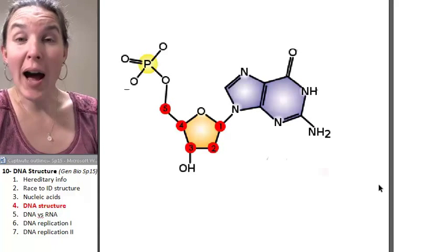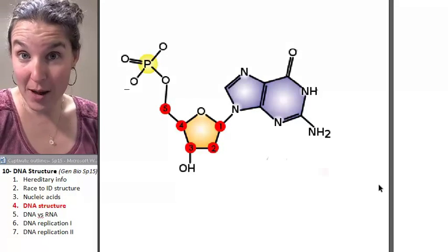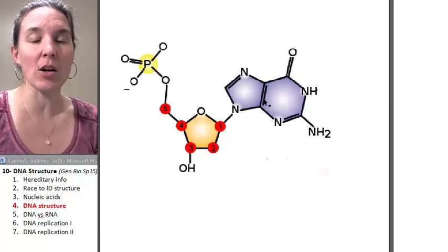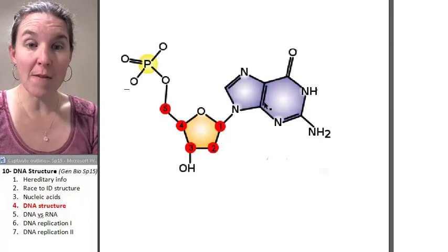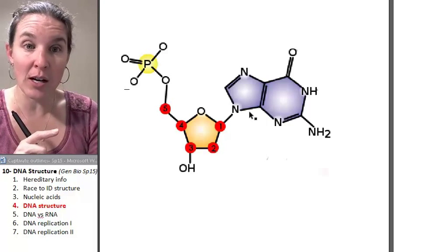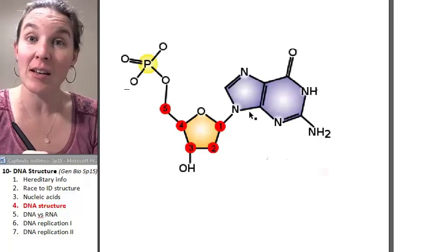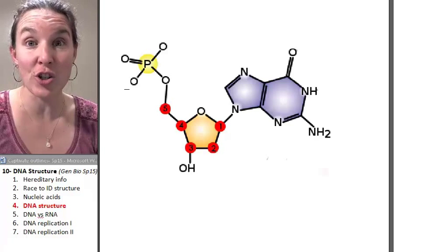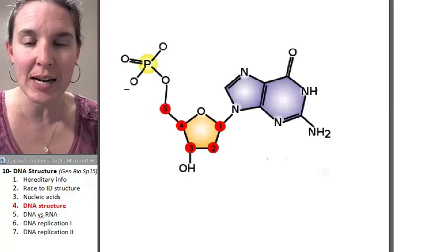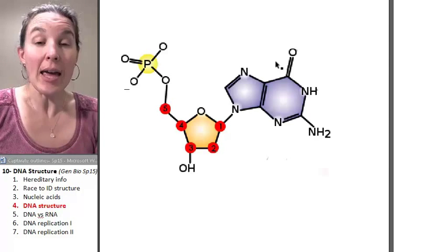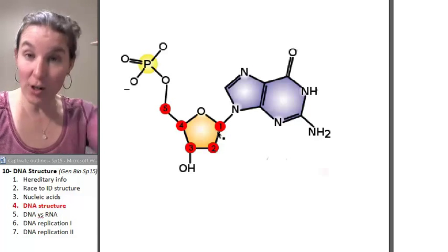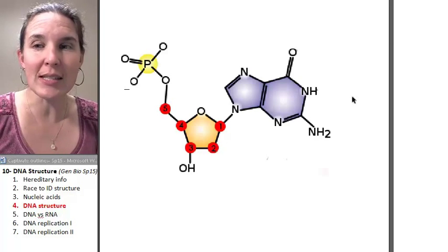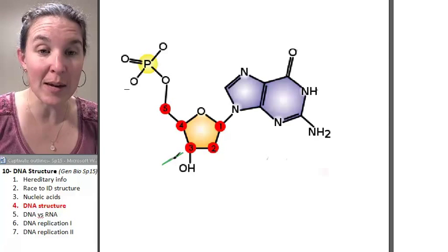Let's label the five prime and three prime ends of this nucleotide. Remember how the fifth carbon in the pentose sugar is attached to the phosphate, and the third carbon is where we could potentially attach another sugar molecule or another nucleotide. This image shows the actual chemical structure of a nucleic acid or a nucleotide, and you can see the actual carbons have been labeled here.